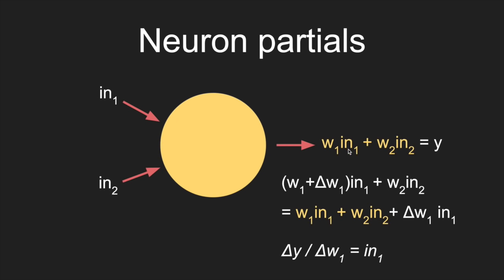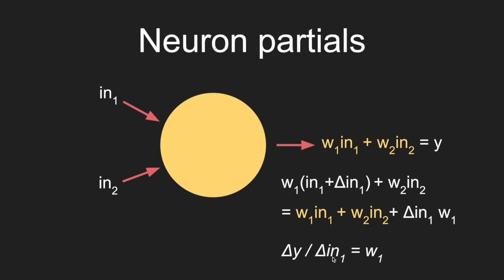For example, if the first input is five and we increase the weight by one, the output will increase by five. If the input is zero, the output won't change at all if we change the first weight because it's multiplied by zero. The derivative of the output of the neuron with respect to the weight is just the input that the weight modifies. We could flip this around: the derivative of the output with respect to the first input is the first weight, meaning the bigger the first weight, the more rapidly the output changes as we change the first input. The weight basically controls how fast the output changes with respect to the input.